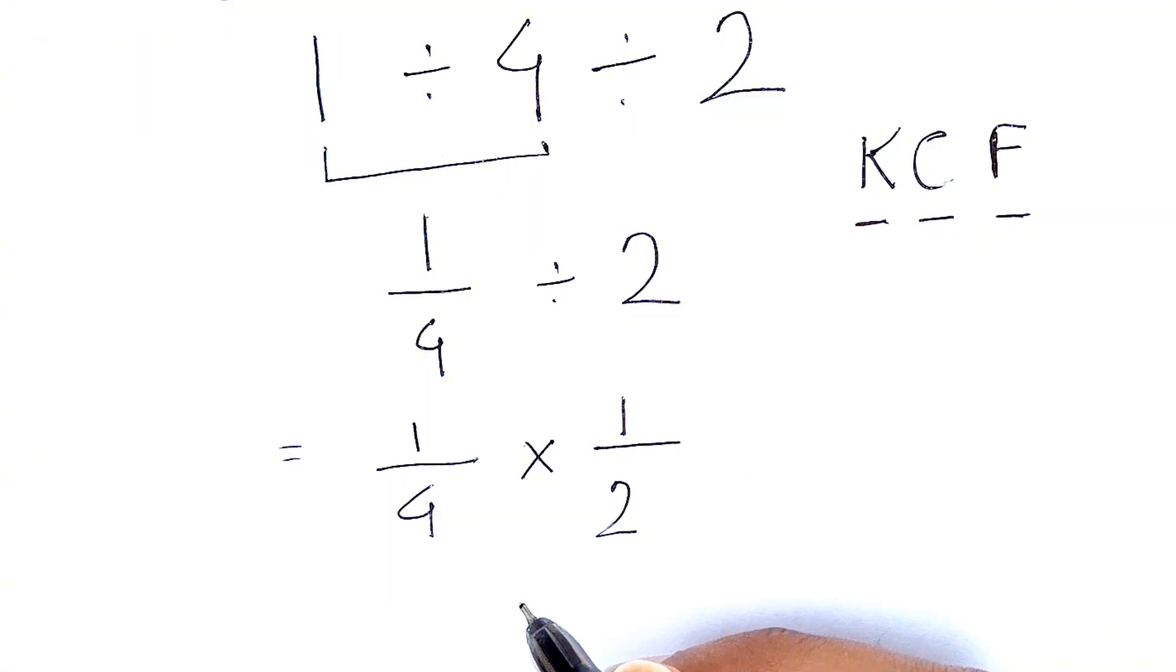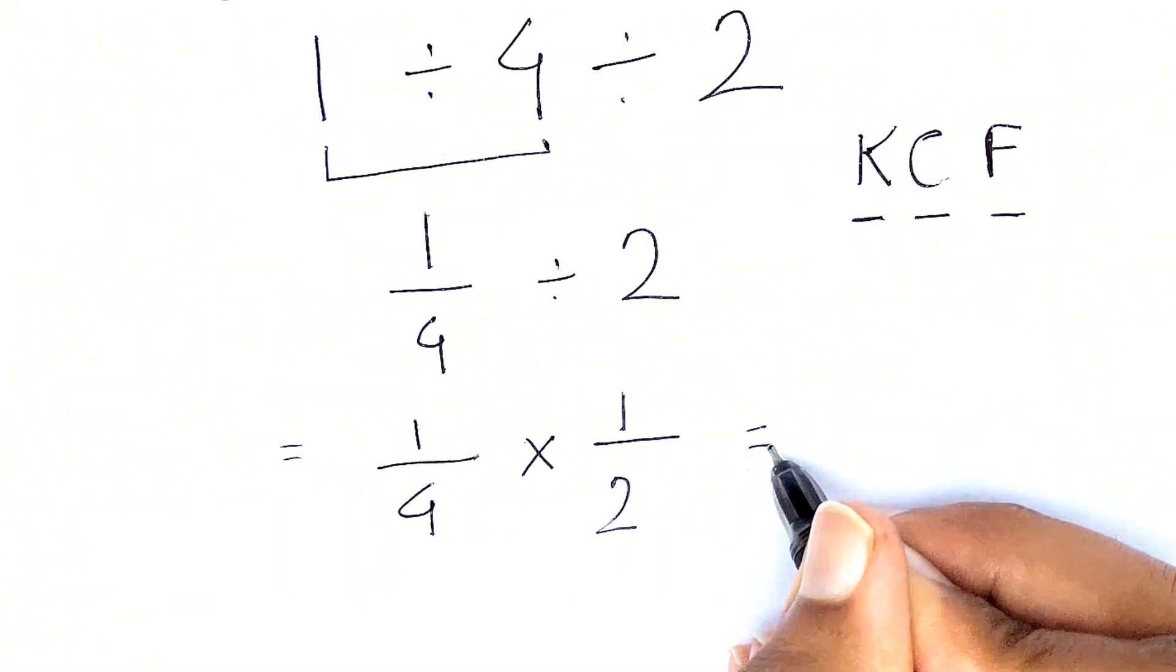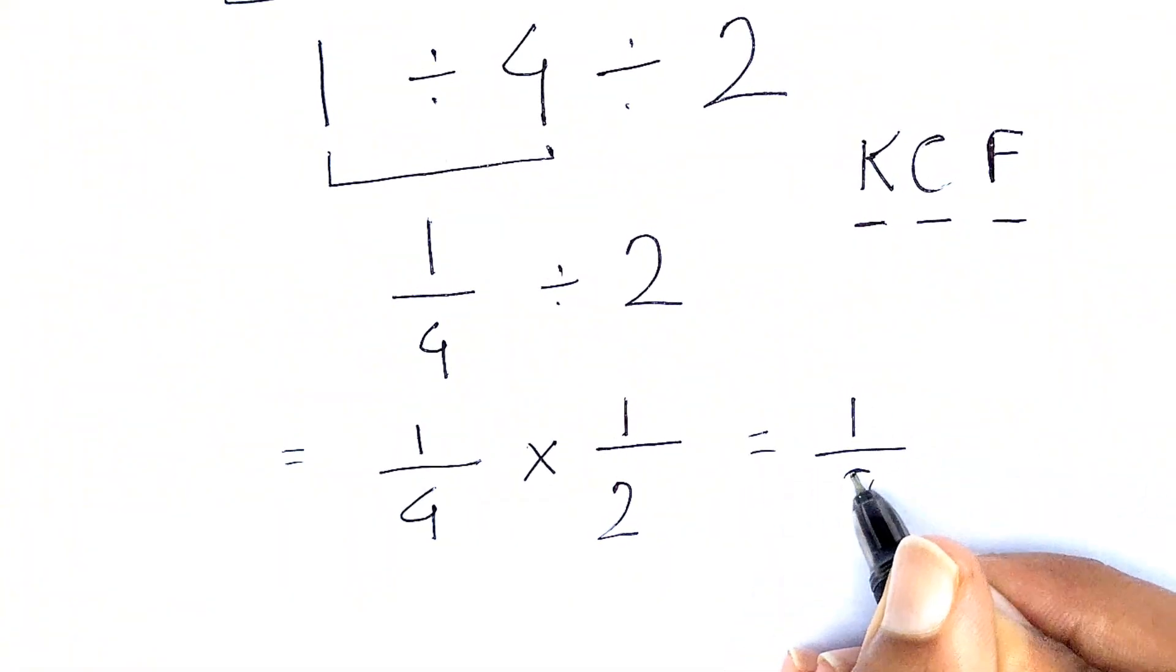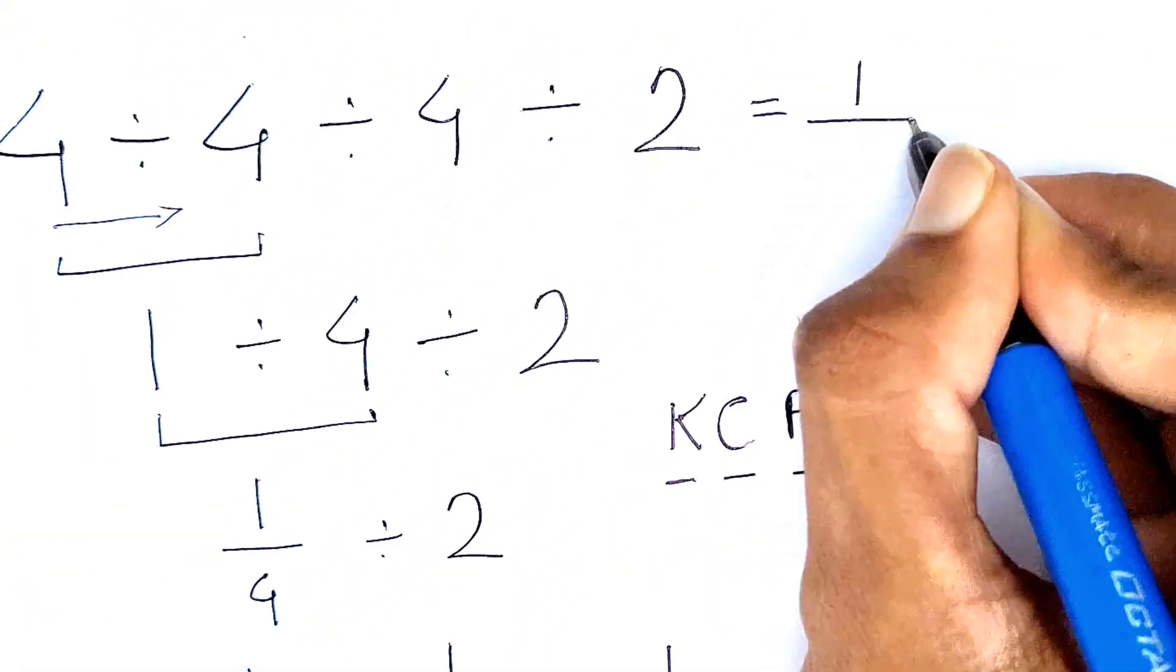Now it has become very simple for us to solve this. So 1 times 1 is 1, and 4 times 2 is equals to 8. So the final correct answer is 1 over 8. Please subscribe for more videos.